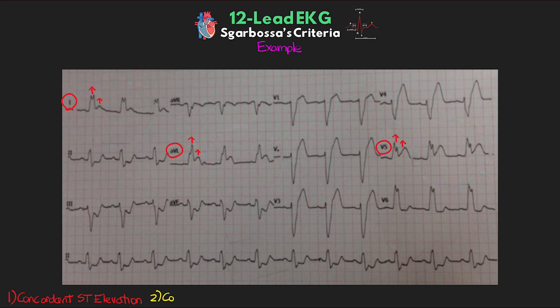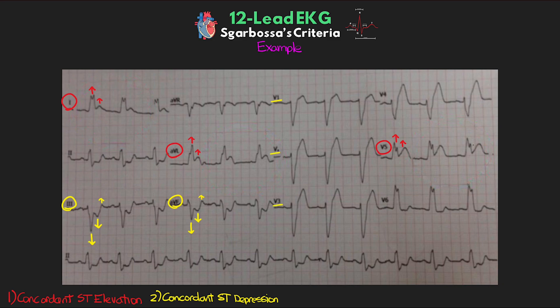Next, let's look for concordant ST depression. Hopefully you're able to spot the two easy ones in our inferior leads — lead III and AVF. We have predominantly negative S-waves, so we'd expect to see positive T-waves, which we do have here, as well as normally we'd expect ST elevation. But instead here we have ST depression — that is concordant ST depression. In this example, the concordant ST depression is not present in V1 through V3, so this example wouldn't independently indicate STEMI. What we're probably seeing is more in the context of reciprocal changes in the inferior leads due to a high lateral STEMI. But it serves as a good example of what concordant ST depression looks like.